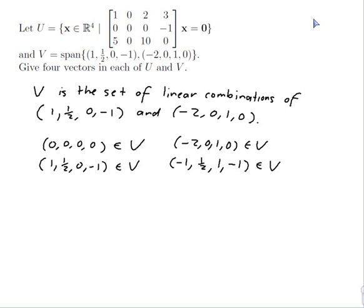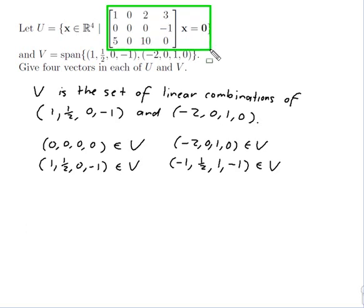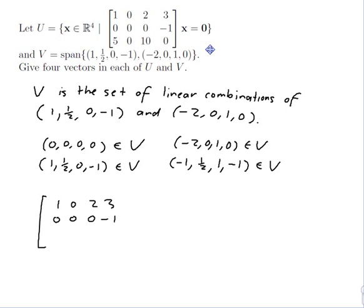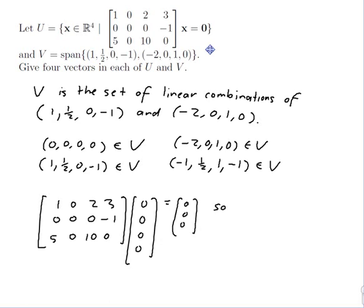Now let me think about U. I have a rule: if I multiply my vector by the matrix and get the zero vector, it's in U. One vector that satisfies this immediately is the zero vector — putting it in for x will definitely give the zero vector as the answer. So the zero vector is in U.